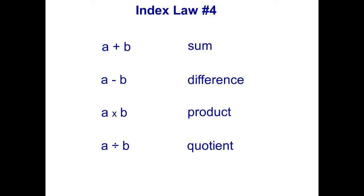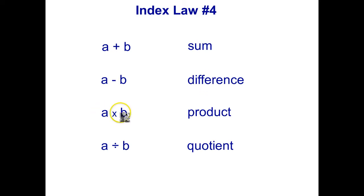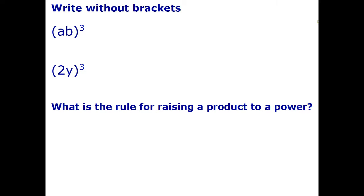Hello students. We'll be looking at index law number four in this video, but before we do that, just a quick reminder on some terminology we use both for arithmetic and for algebra. If we're adding two terms together, that's called a sum. Subtracting one term from another is called a difference. Multiplying two factors together is called a product. And dividing is called a quotient. We're going to need that terminology to write the next index law.